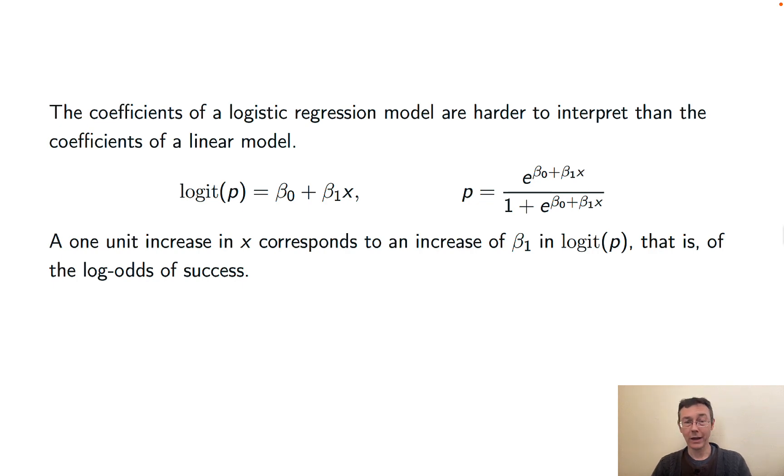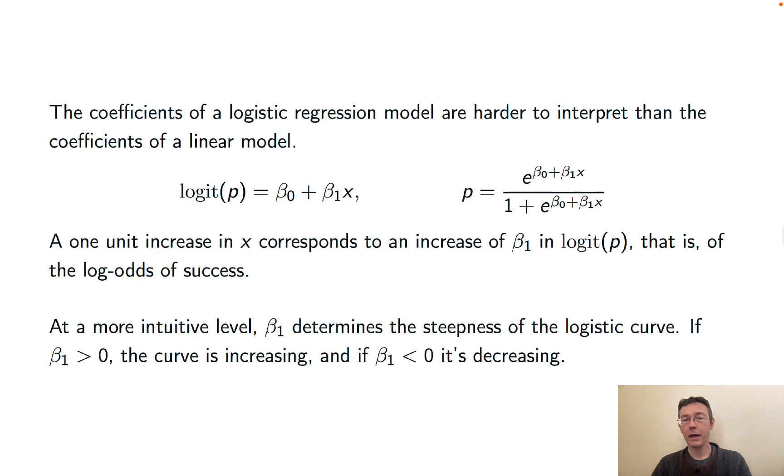I have a whole video on odds and log odds, rather odds and odds ratios. I'll throw that up top. That might help build some intuition there as well. But fundamentally, and I think even more intuitively, beta 1 is just affecting the steepness of the logistic curve.